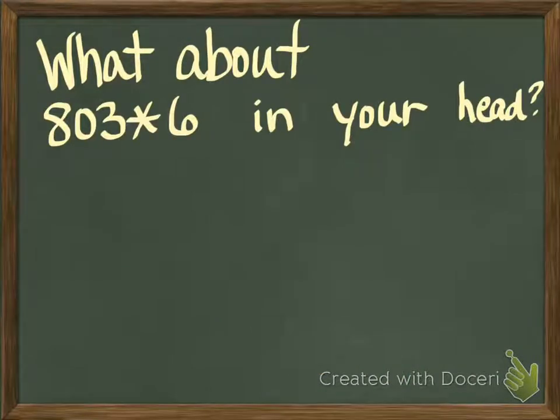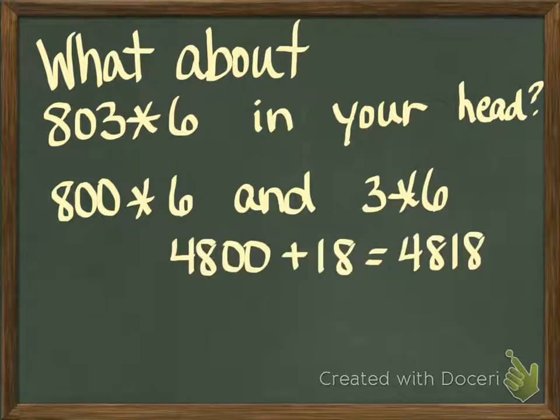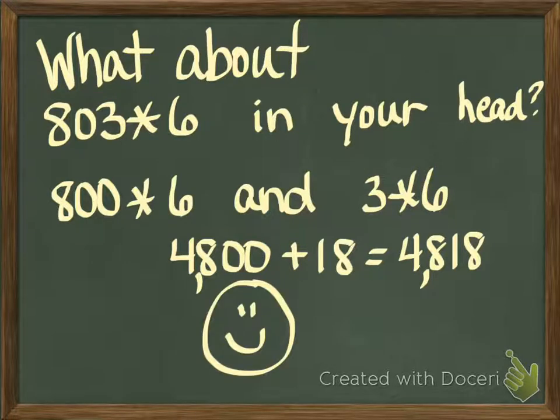So what about 803 times 6 in your head? Could we do 800 times 6 and 3 times 6 and add them together? We sure could. 800 times 6 is going to give me 4,800, and 3 times 6 would give me 18. I add those together, I get 4,818. I'm going to stick my commas in there.